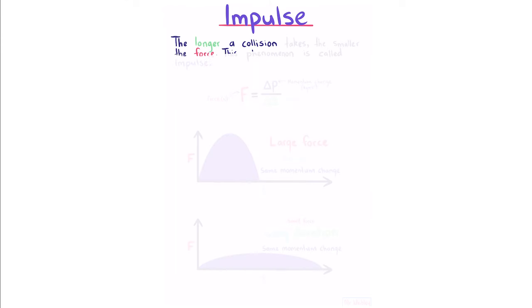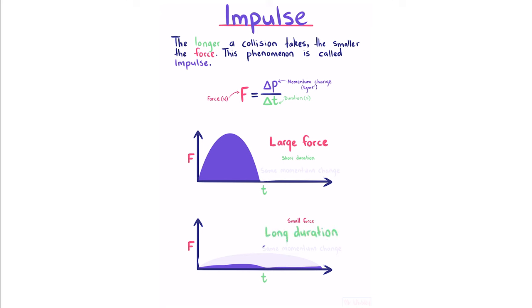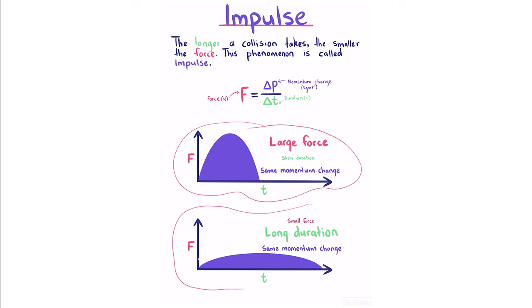Impulse. The longer a collision takes, the smaller the force — this phenomenon is called impulse. As an equation: force = change in momentum / duration. On a force-time graph, a large force over a short duration and a small force over a long duration can have the same area, meaning the same change in momentum. Consider a car: stopping suddenly by slamming the brakes versus gently applying them both change the same momentum, but over different durations.